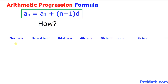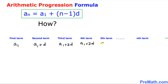Let's write down our arithmetic progression. The very first term is called a sub 1. The second term is a sub 1 plus d, where d is called the common difference. The next term is a sub 1 plus 2d. The fourth term is a sub 1 plus 3d, and the fifth term is a sub 1 plus 4d.